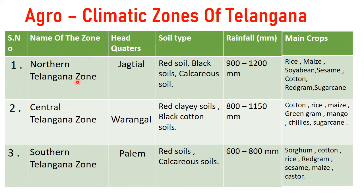Northern Telangana zone headquarters is Jagithyal. Soil types are red soil, black soils, and calcareous soils. Rainfall is 900-1200 mm. Main crops are rice, maize, soya bean, sesame, cotton, red gram, and sugarcane.